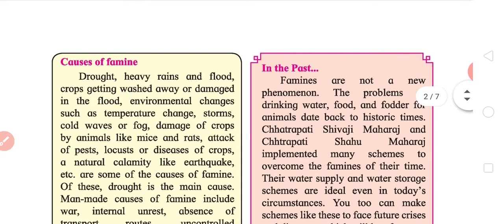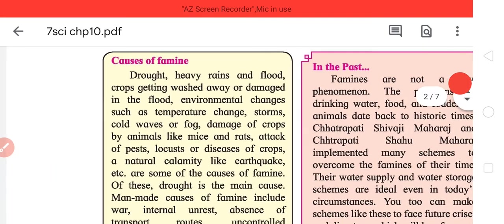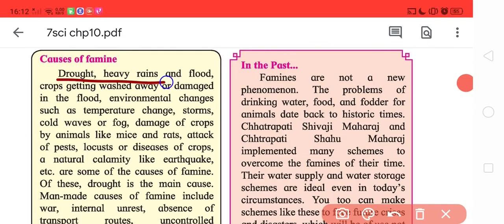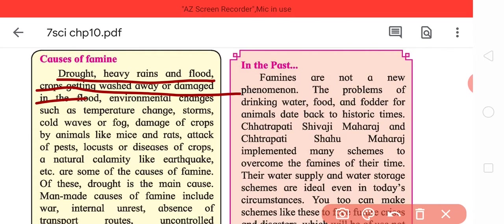Drought, heavy rains and flood. As droughts happen, plants don't get water, they dry up and there are no food grains. Heavy rains and floods wash away the plants and again there is no food grain. Crops getting washed away or damaged in floods. Environmental changes such as temperature changes. Let me give an example from previous year.